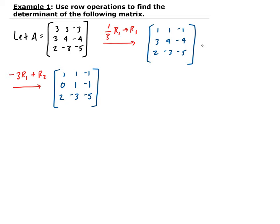Now I want to make this 2 into a 0. So we're going to take minus 2 times row one, add it to row three, and store that result in row three. So we get 1, 1, negative 1 — then 0, 1, negative 1 — then 0, and minus 2 plus 2 is 0; minus 2 minus 3 is negative 5; and negative 2 times negative 1 is 2, minus 5 gives us negative 3.